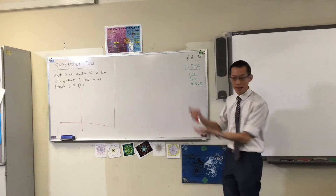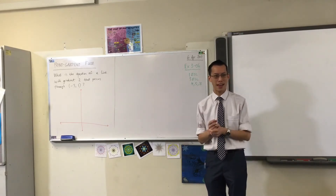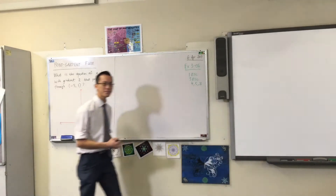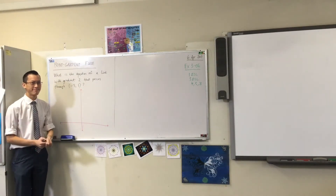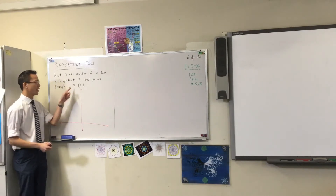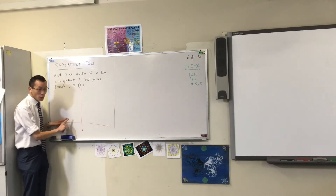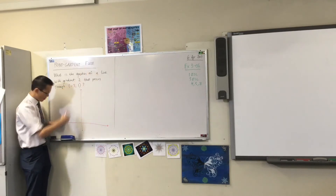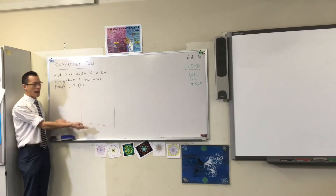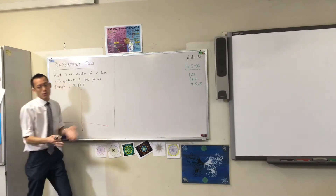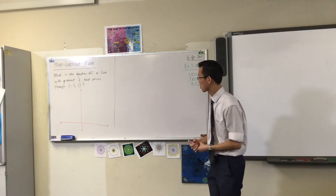Can anyone suggest, by looking at the information provided, why that might be a good direction to head in? Ismael: Because the gradient is 2 and it's positive, meaning it's going up, and it's bigger than 1, so it's steep. Fantastic. I'm going to start over here and then go up really fast. There is going to be a part below, but I'm not going to draw most of it — that's why most of my graph is above the x-axis.